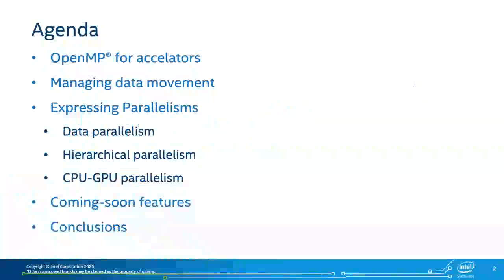The agenda for today covers basic features of OpenMP, in particular for accelerators, and focuses on two main parts of offload programming: managing data movement and expressing parallelism to take advantage of massive parallel computing on GPUs. I will also discuss some coming-soon features in OneAPI and OpenMP standards, then conclude. I will pause periodically so that Yashi can relay questions or comments from the audience, so feel free to send questions to her.